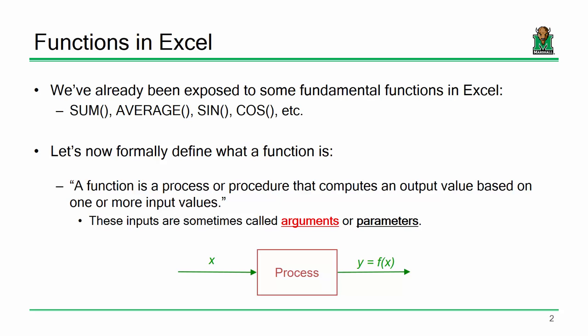I assume everybody has a general concept of how to compute an average — add them up, divide by the total count. If you've got five values, the sum divided by five is the average. We've also used trig functions like sine and cosine. We've used them, but we haven't formally defined them — we haven't gone through and said this is what a function is and how it works.